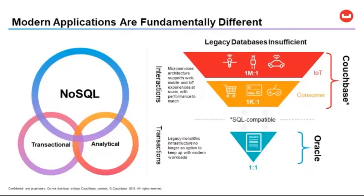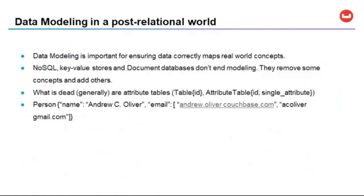We're dealing with some of the negative effects of that with a lot of the software that's out there today. NoSQL databases like Couchbase add and remove concepts from our data modeling lexicon. The conceptual model is a lot closer to the physical model. We no longer have the requirement for attribute tables just because we don't know how many phone numbers somebody may have. We gain the ability to map high-volume simplicity data to key-value stores — just a thing with a key.